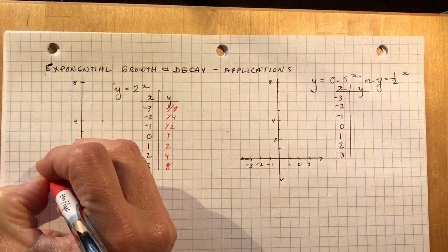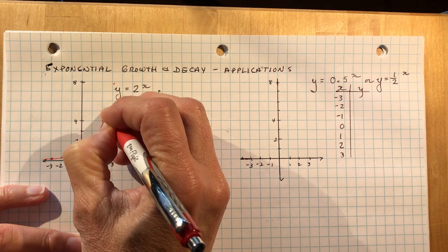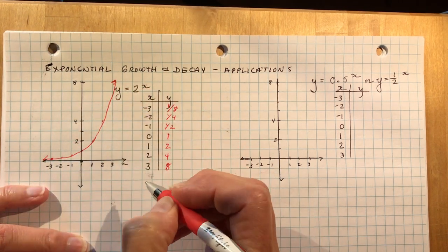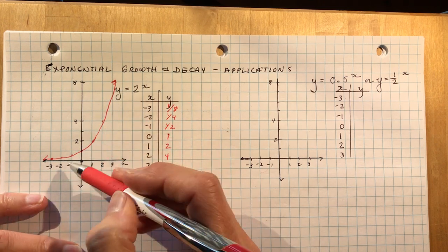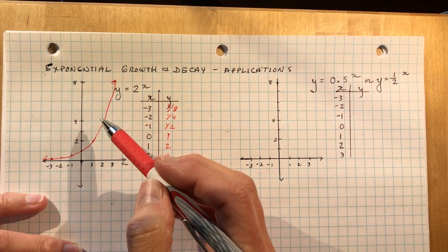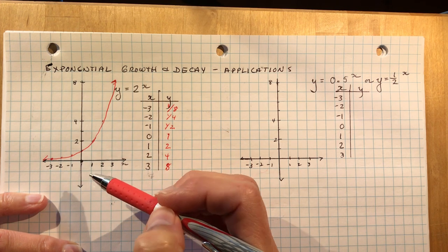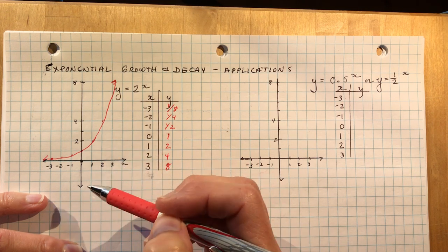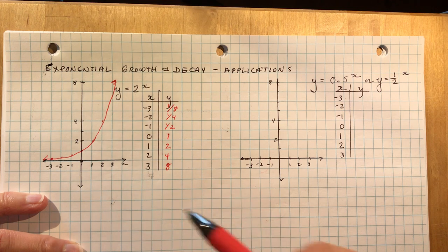So the reason they call this exponential growth, obviously, is because as we read the graph from left to right, it gets higher. So these are things that grow rapidly. And examples of that would be something like cell division you learned in biology. You start with two cells, they split to 4, they split to 8, they split to 16, they split to 32. So you're getting a doubling effect.